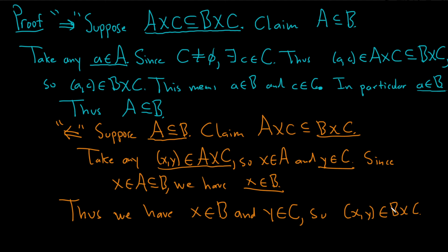We showed it's in B cross C. So this shows the other inclusion. This shows that the other direction rather, A cross C is a subset of B cross C.